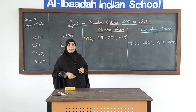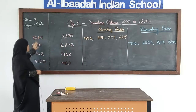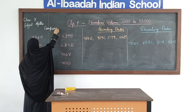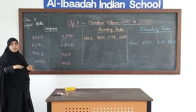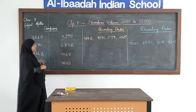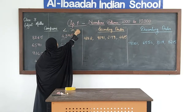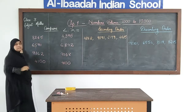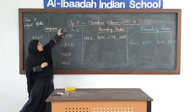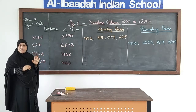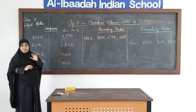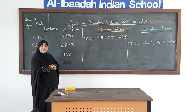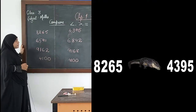Today we are going to learn how to compare 4-digit numbers. I have written pairs of numbers and we will try to compare them. Compare means we will find out which number is greater and which number is smaller in value. To do that we use 3 signs: less than, greater than, and equal sign. The open mouth always faces towards the greater number and the pointed edge towards the smaller number. Your teachers must have told you about the crocodile's open mouth — it faces towards the greater number.